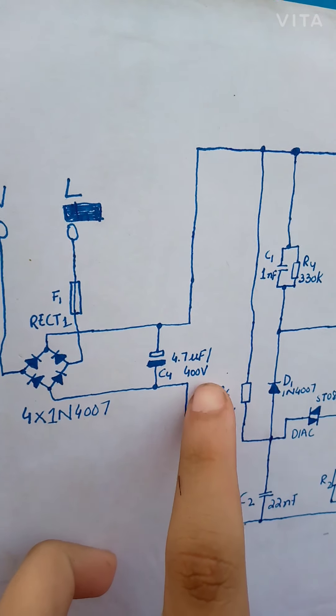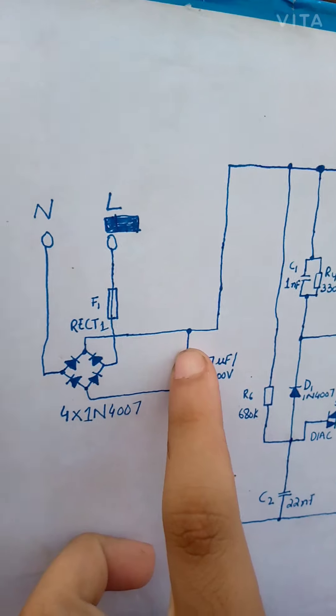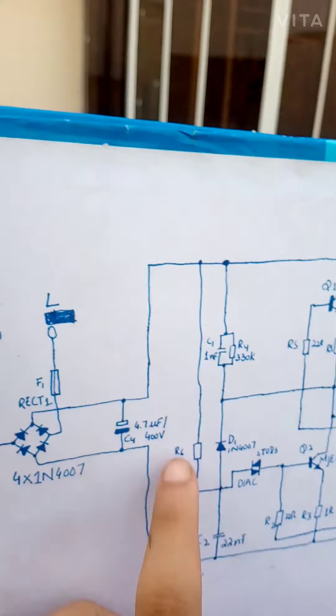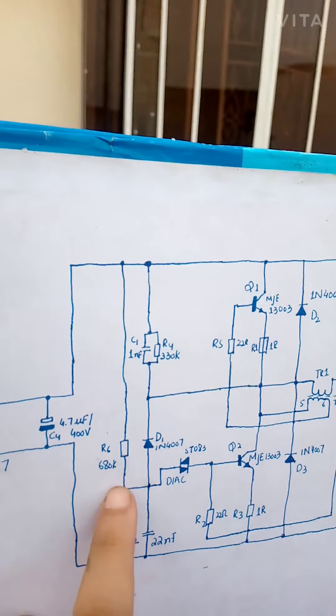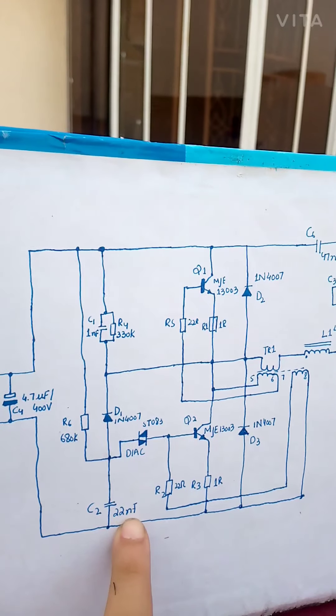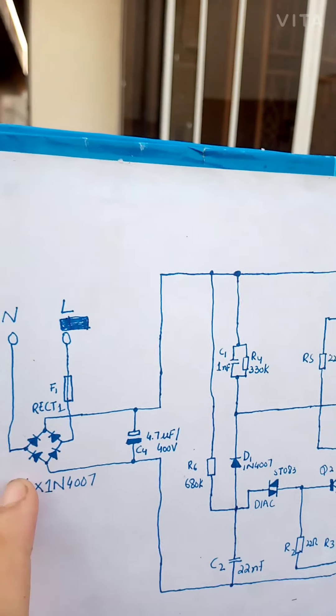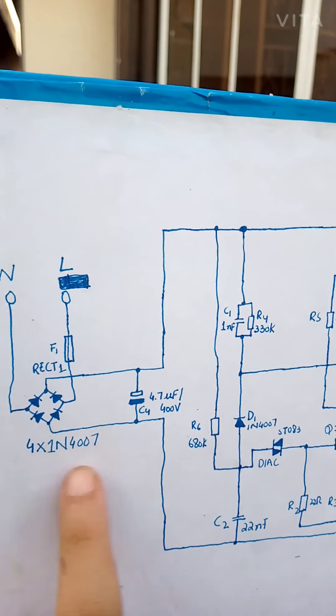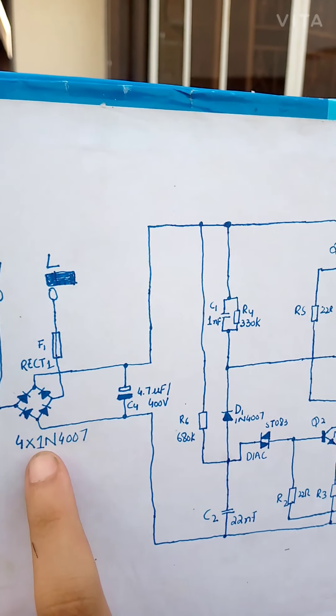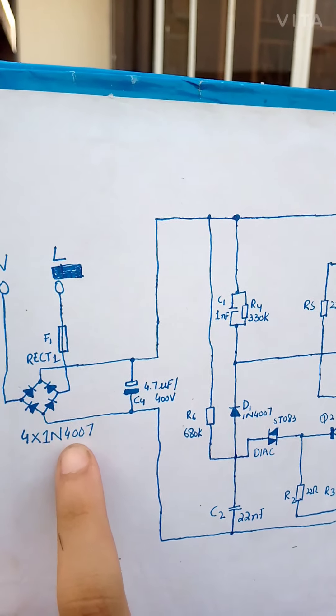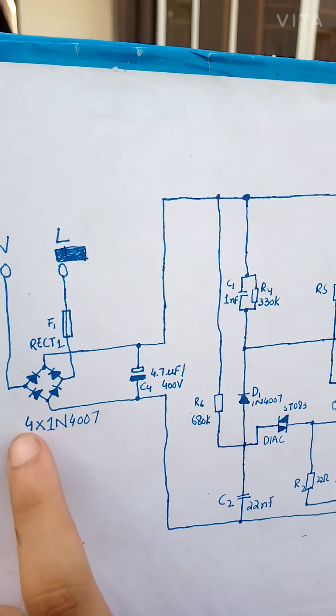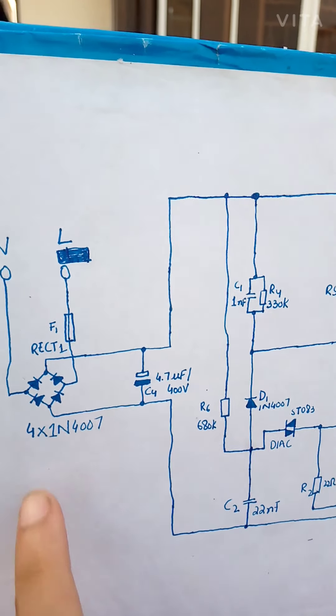Rectifier output positive DC positive is connected to 4.7 microfarad 450 volt capacitor positive, as well as 680 ohm resistor and across 22 nanofarad 450 capacitor. This capacitor negative as well as full bridge rectifier, it is not a ready-made full bridge rectifier.